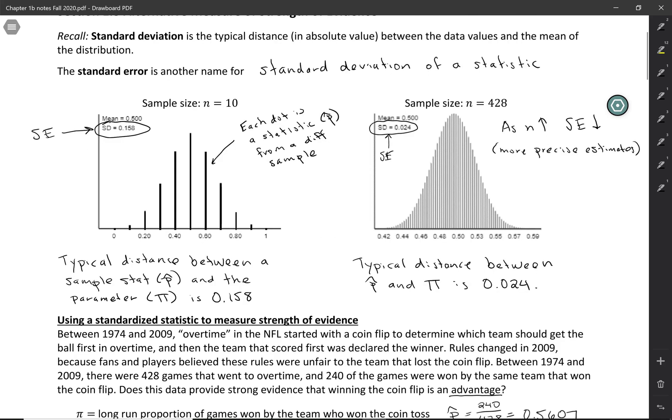We can draw this on the graph. Let's find our sample proportion 0.5607—you can see it's pretty far out there. This is pretty unusual. We wouldn't expect to see data like this if the rule were actually fair. This 2.5 standard errors from the center is a pretty extreme value.